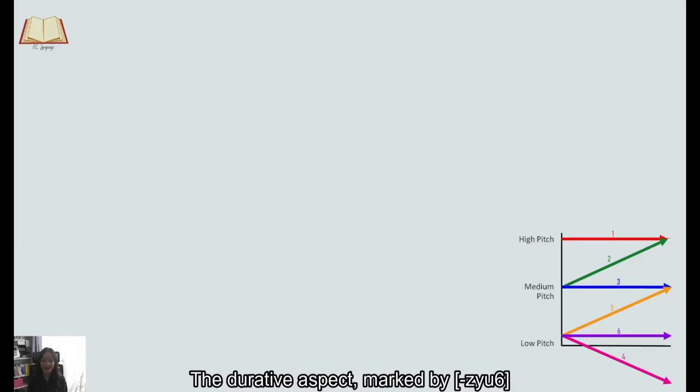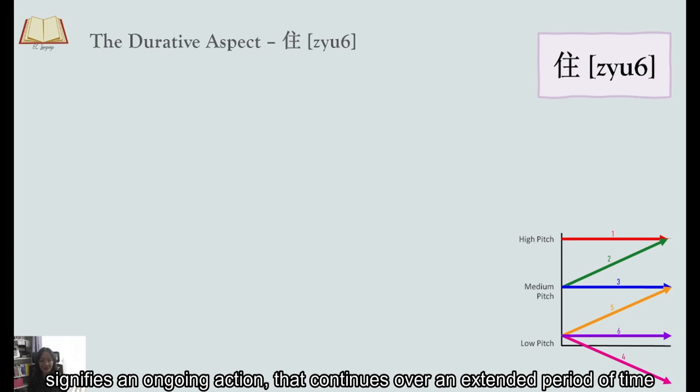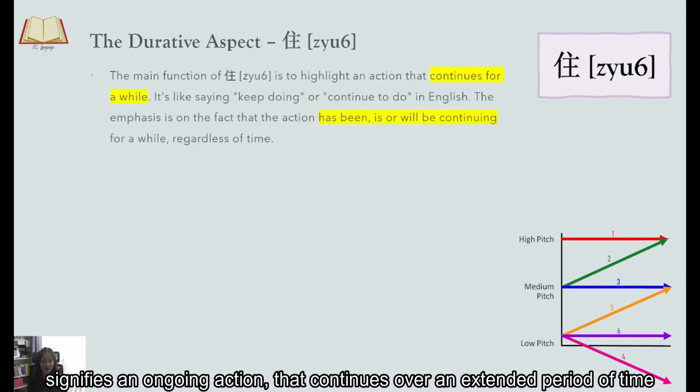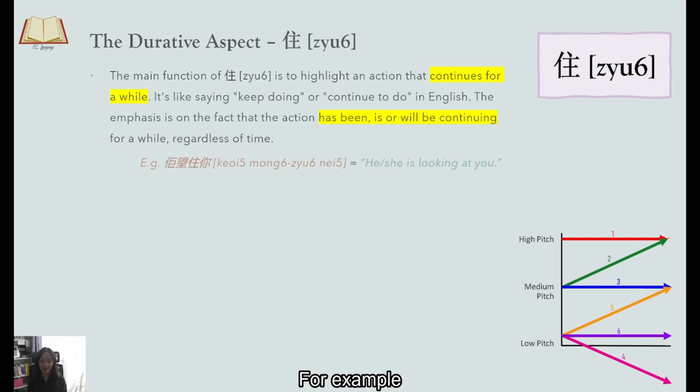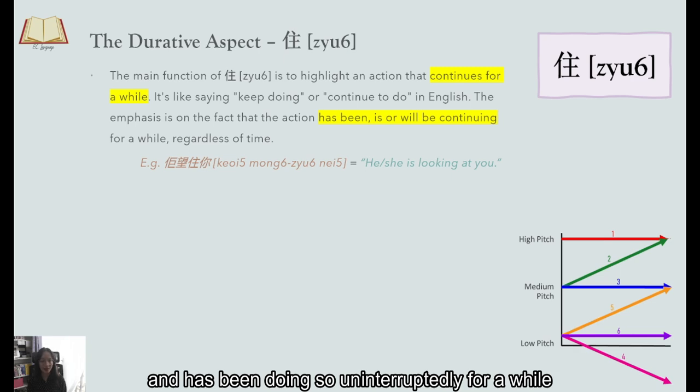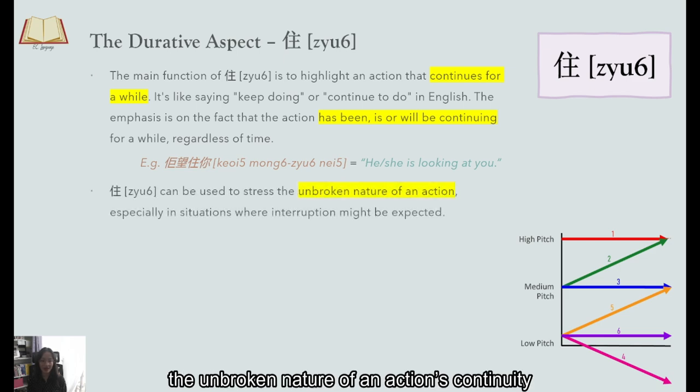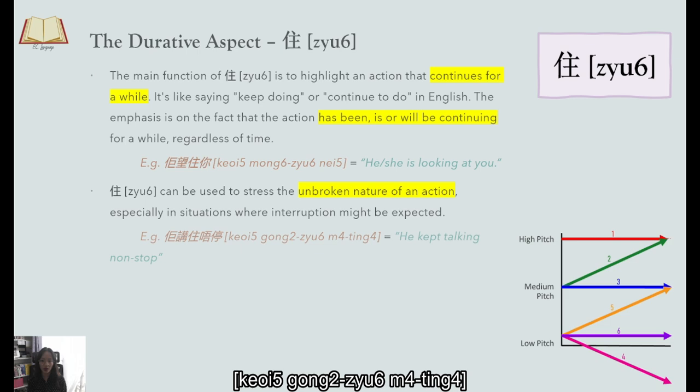The derivative aspect marked by 住 signifies an ongoing action that continues over an extended period of time For example 佢望住你 He or she is looking at you and has been doing so uninterruptedly for a while You could say this is staring instead This derivative aspect mainly emphasizes the unbroken nature of an action's continuity Like 佢講住唔停 He kept talking non-stop